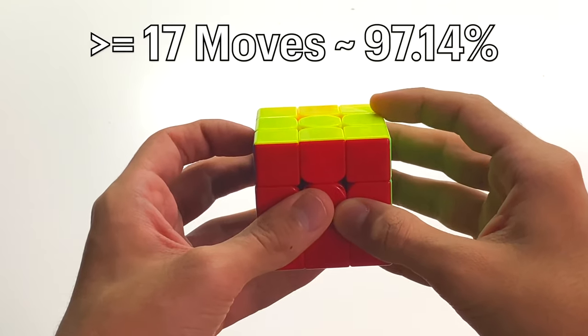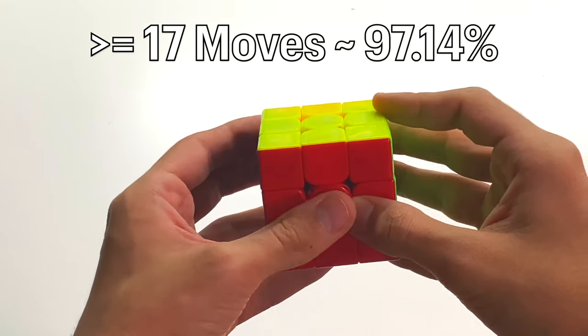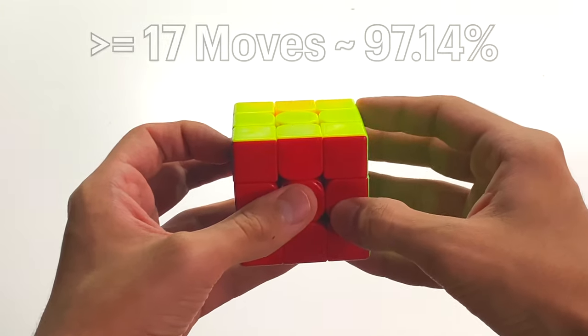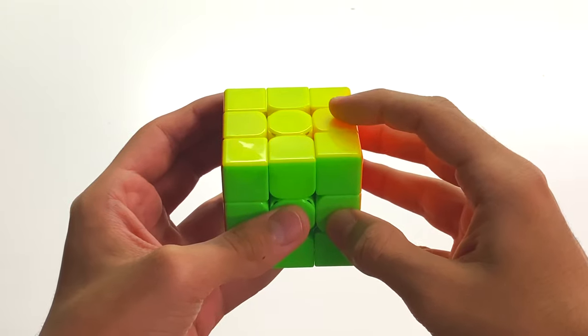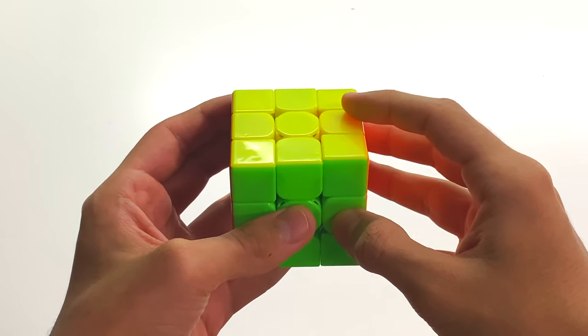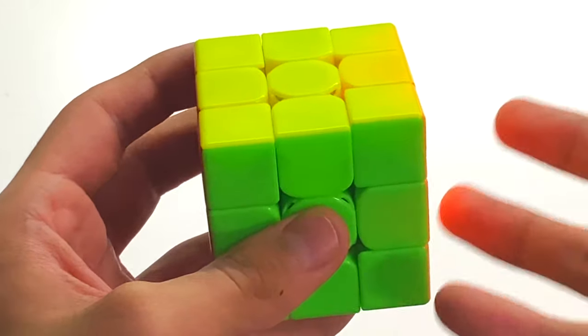In fact, I did a quick calculation and it turns out as of June 2019, over 97% of the official 3x3 scrambles took more than 17 moves to solve optimally. However, did you guys know that there have been official scrambles with optimal solutions as low as 13 moves?